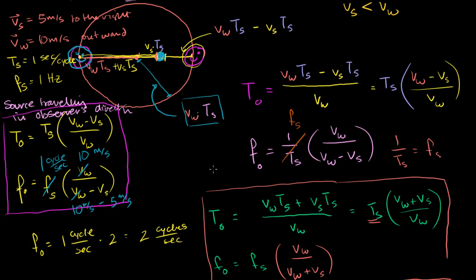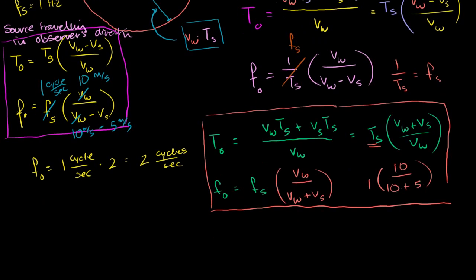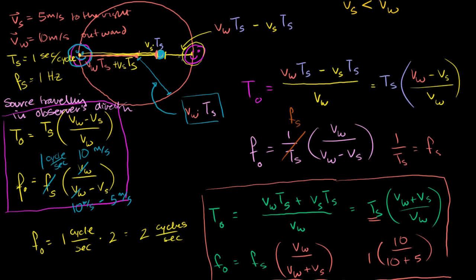For the observer the source is running away from: 1 hertz times v sub w divided by (v sub w plus v sub s) equals 1 times 10 over (10 plus 5), which is 10 over 15 — that's 2/3 cycles per second. This confirms the numbers from that first video. The observer in the path of the source sees each crest more frequently — a higher frequency, or higher pitch if this is sound. The observer being moved away from sees the cycles spread out, so he observes them less frequently and perceives a lower pitch.